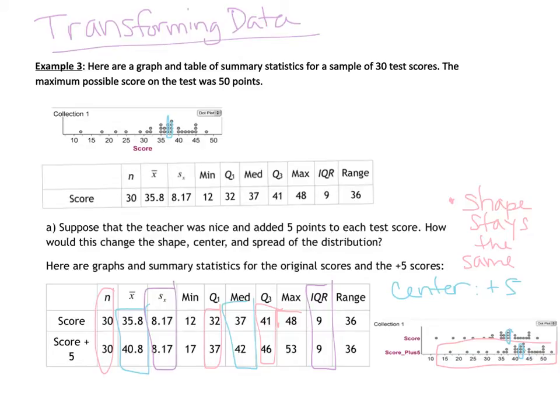Maximum and minimum, once again, those are still two students' test scores. Those are also going to change by five. Range, still going to be 36. If you subtract the max minus the min, it is going to stay the same. So the center is increased by five. The shape stays the same. Also, the spread stays the same.